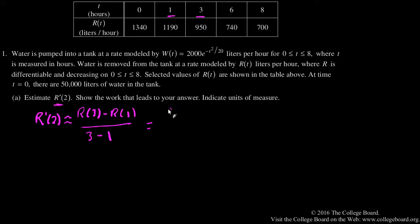r of 3 is 950. r of 1 is 1190. 3 minus 1 is 2. Let's see, 950 minus 1190 gets me negative 240, over 2, which is negative 120.